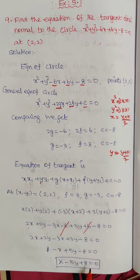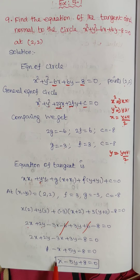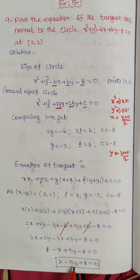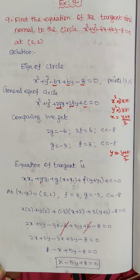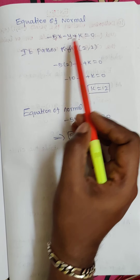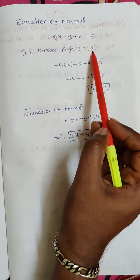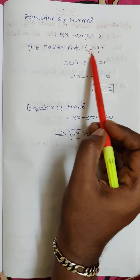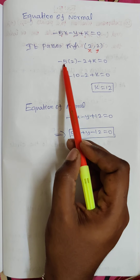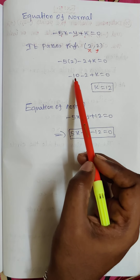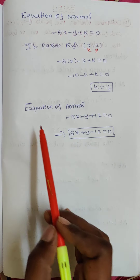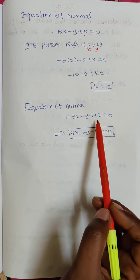From the equation of tangent we find the normal. The normal has swapped coefficients of x and y with a sign change, giving minus 5x minus y plus k equal to 0. Since it passes through the point (2, 2), we substitute: minus 5 into 2 minus 2 plus k equal to 0, so minus 10 minus 2 plus k equal to 0, giving k equal to 12.